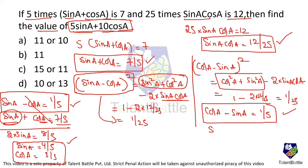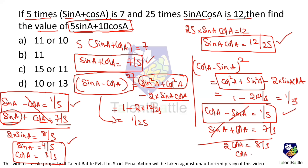For the second case, using sin a + cos a = 7/5 and cos a - sin a = 1/5: adding gives 2·cos a = 8/5, so cos a = 4/5 and sin a = 3/5. Both cases are valid.